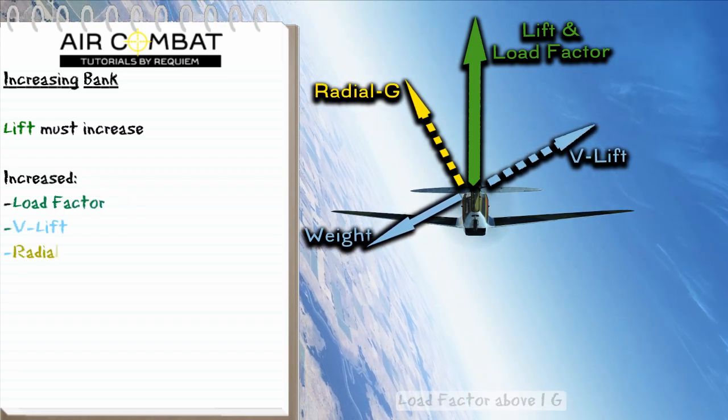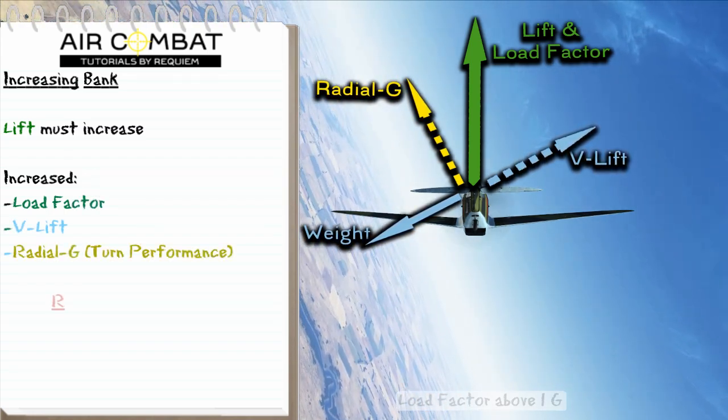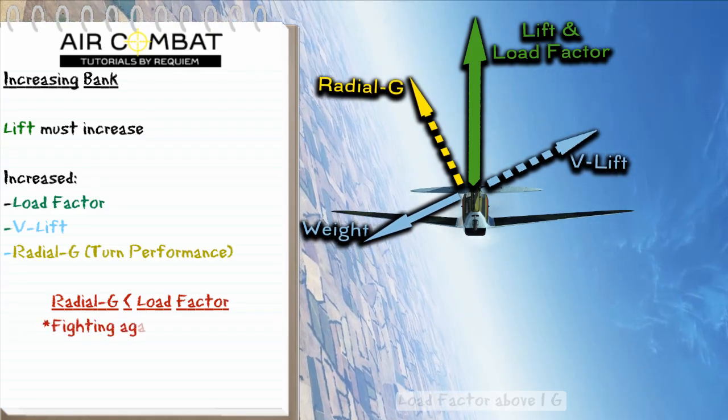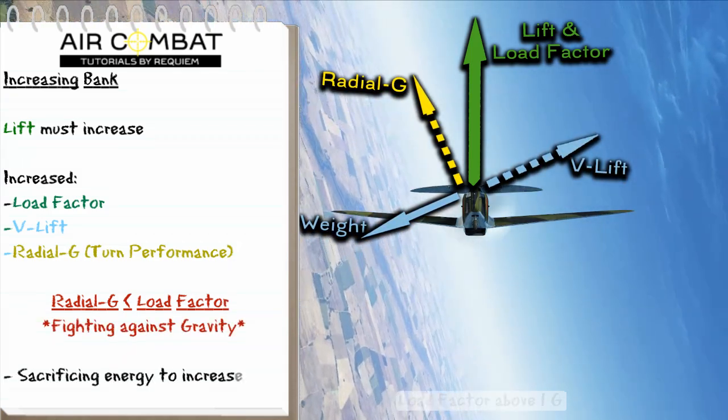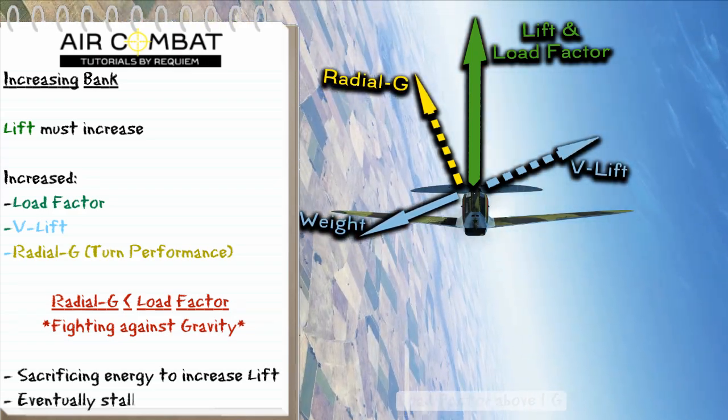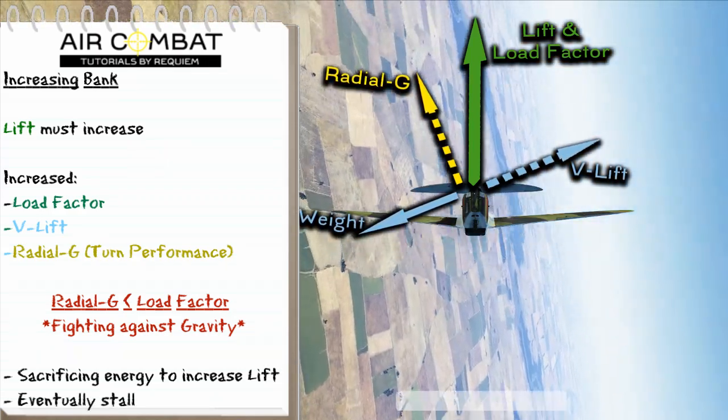This increases load factor, which in turn will increase the vertical lift and the radial G. The problem is that the radial G is going to be less than the load factor, so you're actually fighting against gravity. So this means that in a purely horizontal turn, you're going to be losing energy into the new stall.